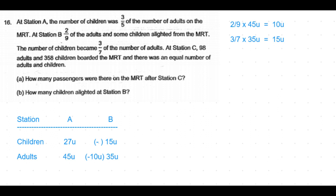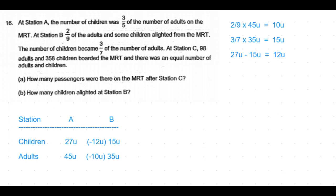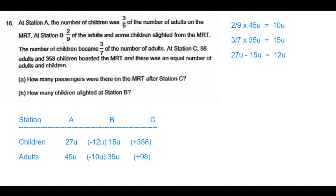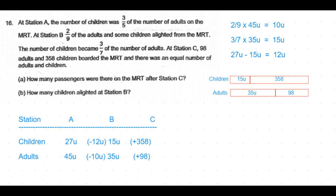Initially there were 27 units of children, and now there are 15 units after Station B. That means 12 units of children alighted at Station B. Moving to Station C, 98 adults and 358 children boarded the MRT. We don't know the final number, but we know adults and children are in equal number after Station C.